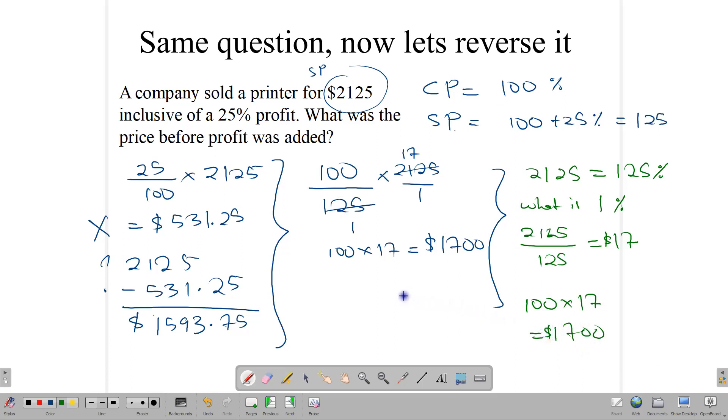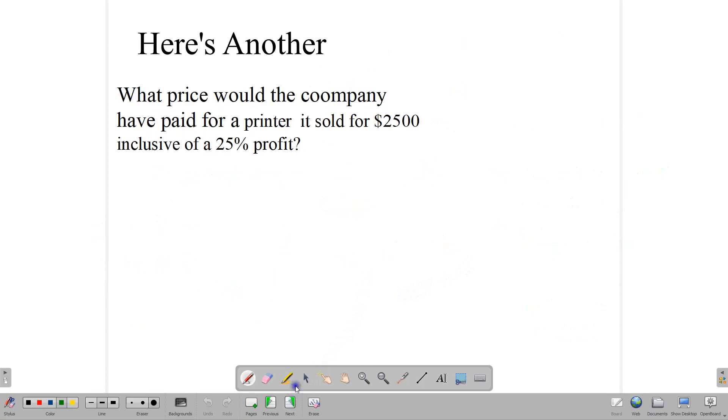We're going to do this a couple more times so that you will get a full understanding of it. Of course, if you want to do this one again, just rewind the video and watch it again. But let's move on to another question. So here, what price would the company have paid for a printer that it sold for $2,500? So if it sold it for $2,500, inclusive of a 25% profit, then remember, your cost price is 100%. Your selling price is going to be 100% plus, in this case, 25%. So it becomes 125%.